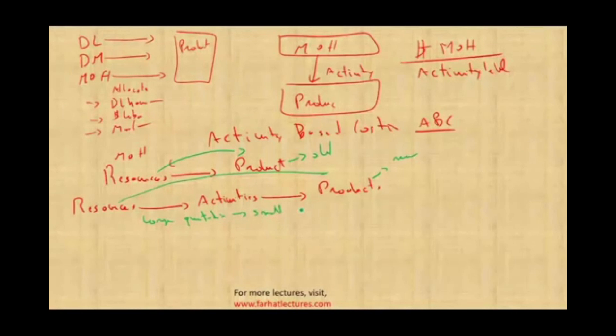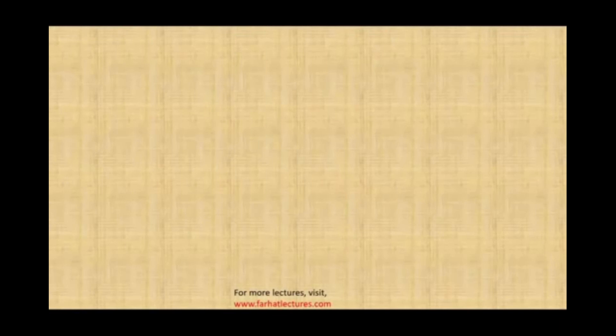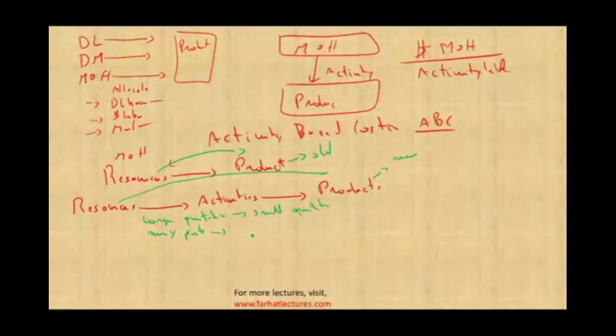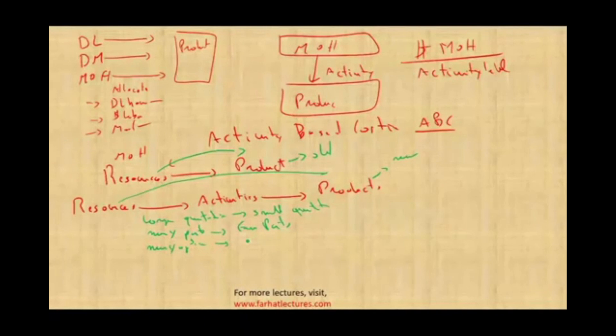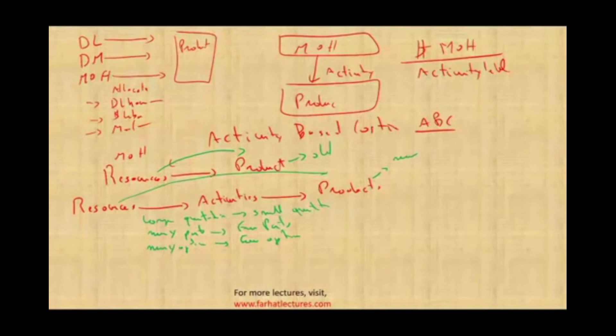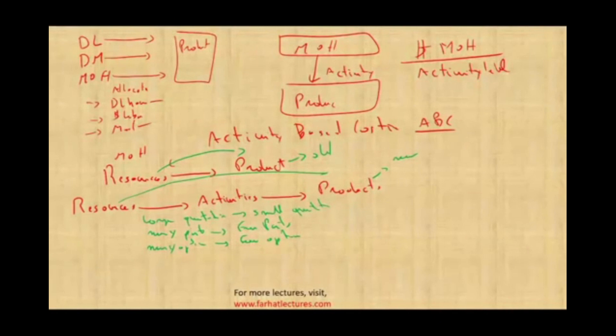Some products have many options — basically, we customize them — and some products have few options. The point is, not all products are created equally. If we take resources and allocate them directly to the product, that's not accurate. We have to know how the product is consuming those resources based on the product itself. In a sense, the old model is a little bit misleading.